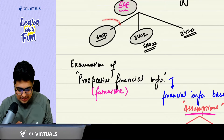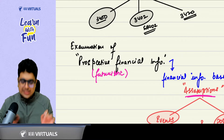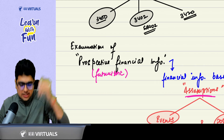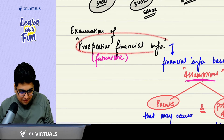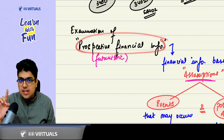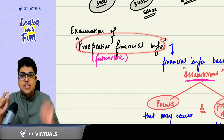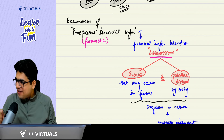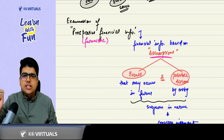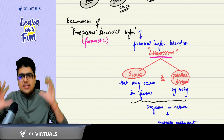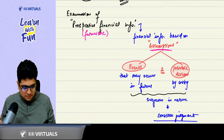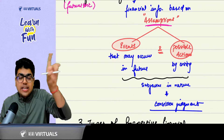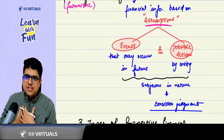In today's class we covered SAE 3400, which is about examination of prospective financial information. Prospective financial information is not like a financial statement — it is futuristic. When financial information is futuristic, it is based on assumptions: assumptions about events which can occur in the future, and what will be the actions of the entity when those events occur.